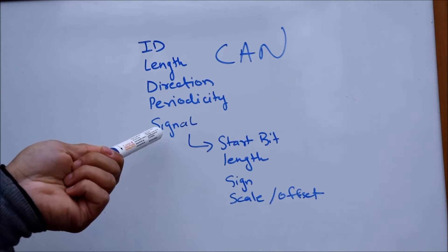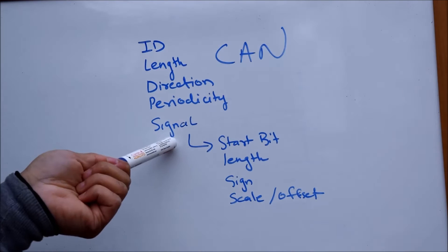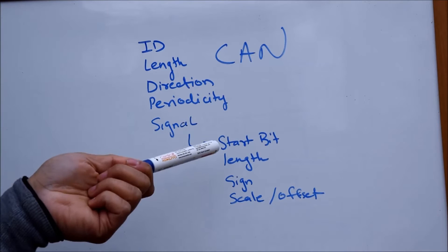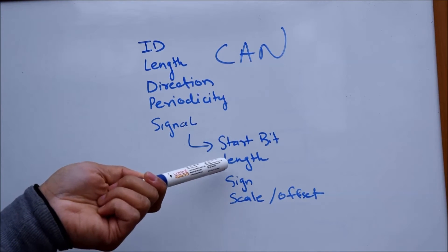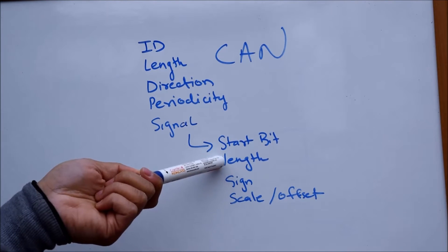And then every message has a certain set of signals. Each signal has a start bit that tells where the signal starts and has a length that tells how long the signal is defined.